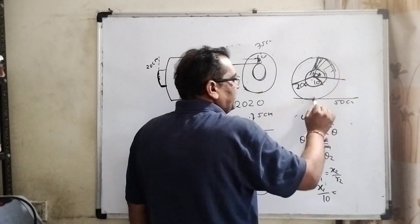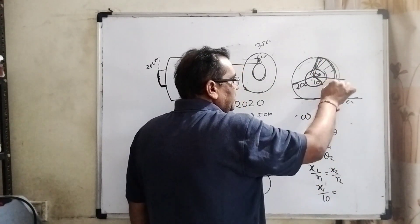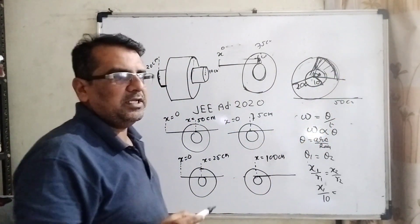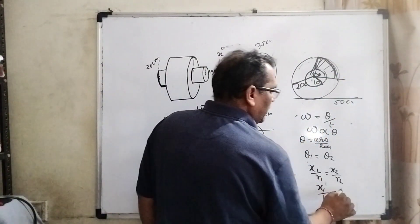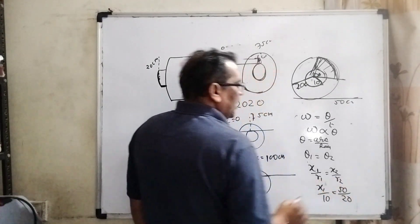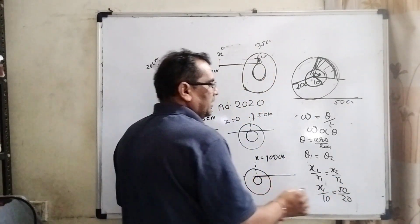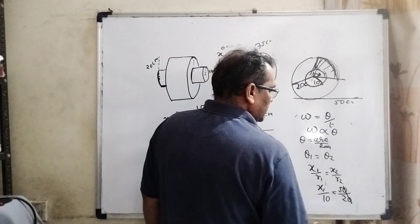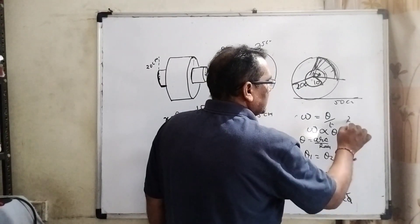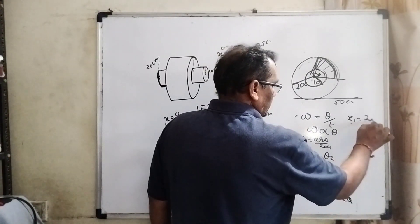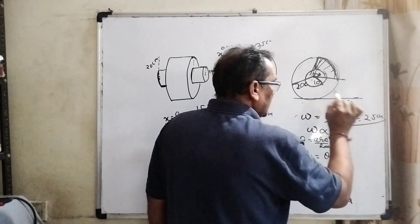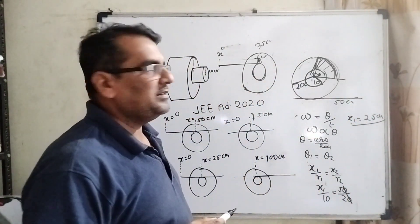It means its arc is 50 centimeters. So therefore, it is 50 and r2 is 20 centimeters. Then this cancels out and x1 is 25 centimeters. Then what does 25 centimeters mean?